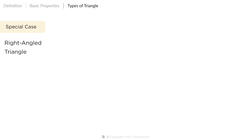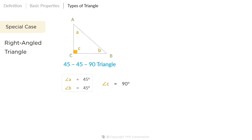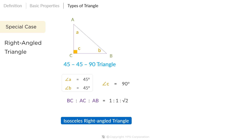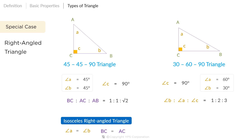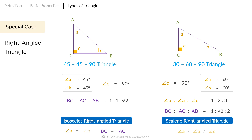Apart from the properties discussed, there are two special cases of right angle triangles. First, the 45-45-90 triangle: two angles measure 45 degrees and the third angle is a right angle. The sides of the triangle will be in the ratio 1:1:√2. This is also called an isosceles right angle triangle since two angles are equal. Second, the 30-60-90 triangle: one angle is 90 degrees and the angles are in the ratio 1:2:3. The sides opposite these angles will be in the ratio 1:√3:2. This is also called a scalene right angle triangle since all three angles are different.